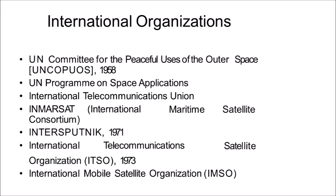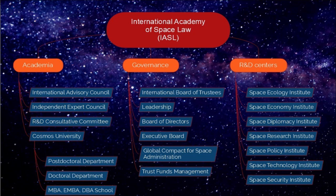The International Academy of Space Law works on academia, governance, and R&D centers. It is structured with an International Advisory Council, Independent Expert Council, R&D Consultative Committee, and Cosmos University. In future, the Academy plans to host fellowships including MBAs, doctoral and post-doctoral programs. Governance includes an International Board of Trustees, Board of Directors, and Executive Board, along with a Global Compact for Space Administration and Trust Funds Management. R&D centers include a Space Ecology Institute, Space Economic Institute, Space Diplomacy Institute, Space Research Institute, Space Policy Institute, and Space Technology Institute.